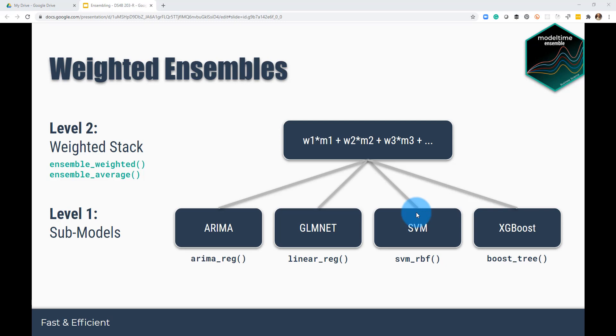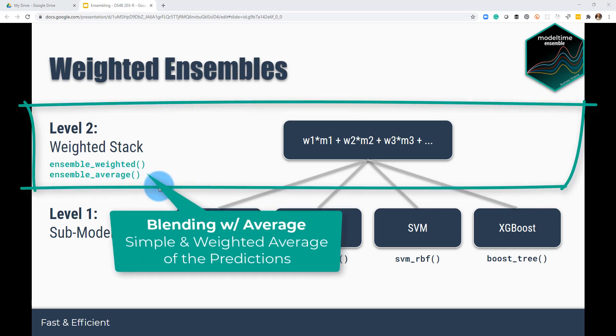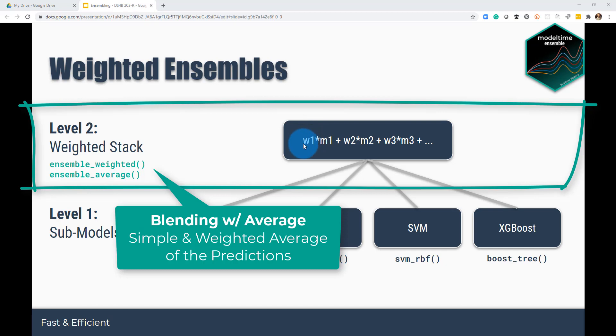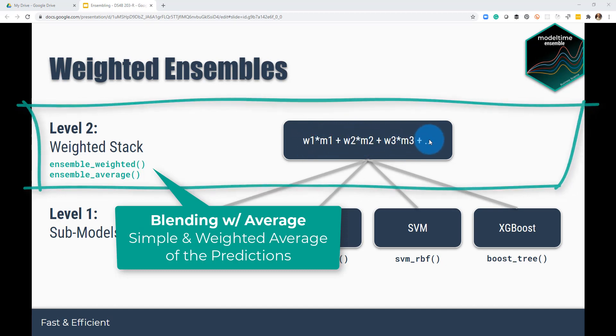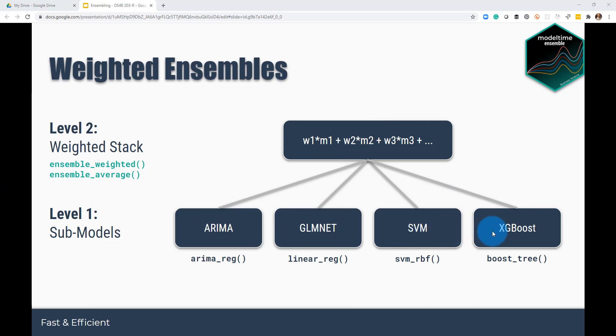One strategy is to weight them using an average. And the most common is just to take the mean, which is where you would have the model predictions are M1, M2, M3, and so on. And if you had four models, each of those weightings would be equally distributed. So it would be 25% ARIMA, 25% GLMnet, 25% support vector machine, and 25% XGBoost. So that's the easiest thing to understand. And model time implements that using this ensemble average function.